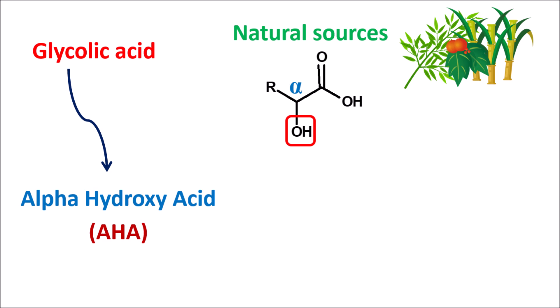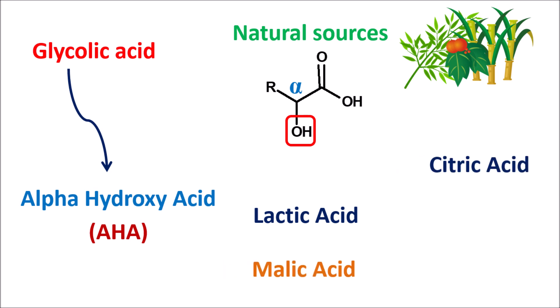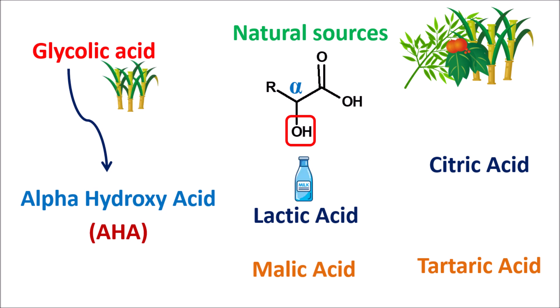We have different types of alpha hydroxy acids including glycolic acid, lactic acid, citric acid, malic acid, and tartaric acid. All these components are derived from natural sources. For instance, glycolic acid is derived from sugar cane, and lactic acid is highly available in dairy products as well as fermented vegetables.